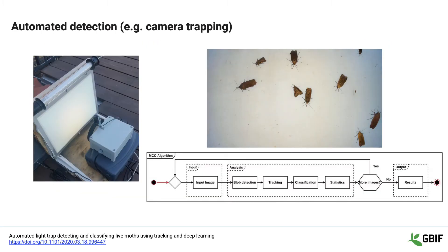We're seeing a growth in automated approaches for monitoring species. The example shown here is an automated camera trap, which I'm looking to deploy in my own garden. Every night during the dark hours, the device will switch on, record pictures of the moths that visit the light trap, and in the morning the images will be processed using AI techniques to try and identify which species have been recorded during the night. I'll then push this data into a citizen science network so that a community vetting process can go on before the data appears on GBIF.